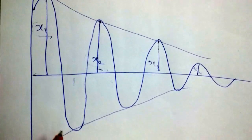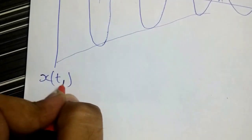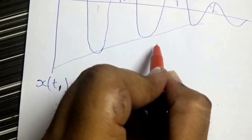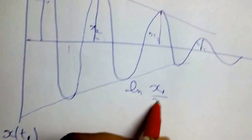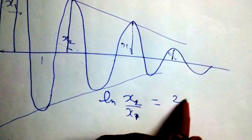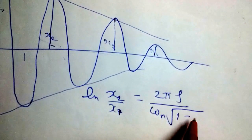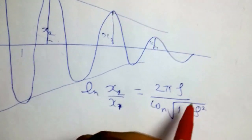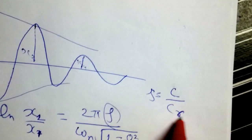Based on the measurement of how much smaller x2 is compared to x1, we can define a scale of measurement for damping in the system. To find out the damping value, we derive the formula: logarithmic decrement equals ln(x1/x2), which equals 2πζ divided by the square root of (1 minus ζ²), where ζ is the ratio of actual damping to critical damping.